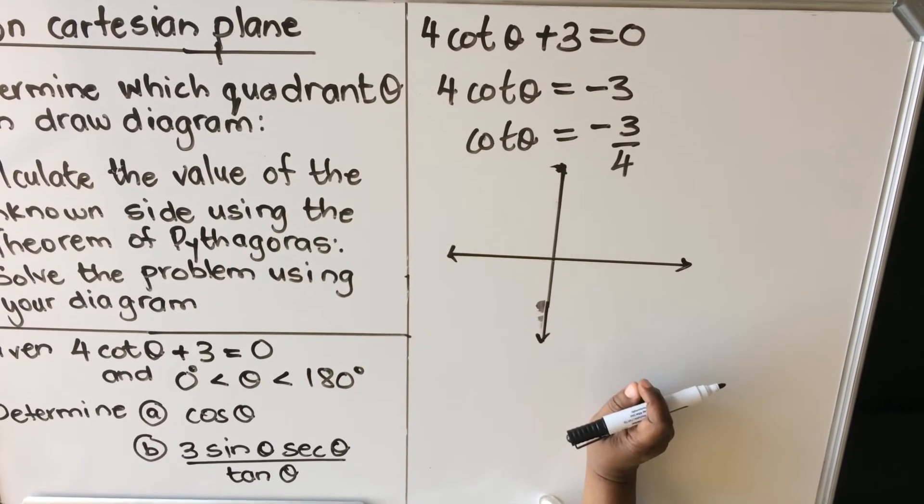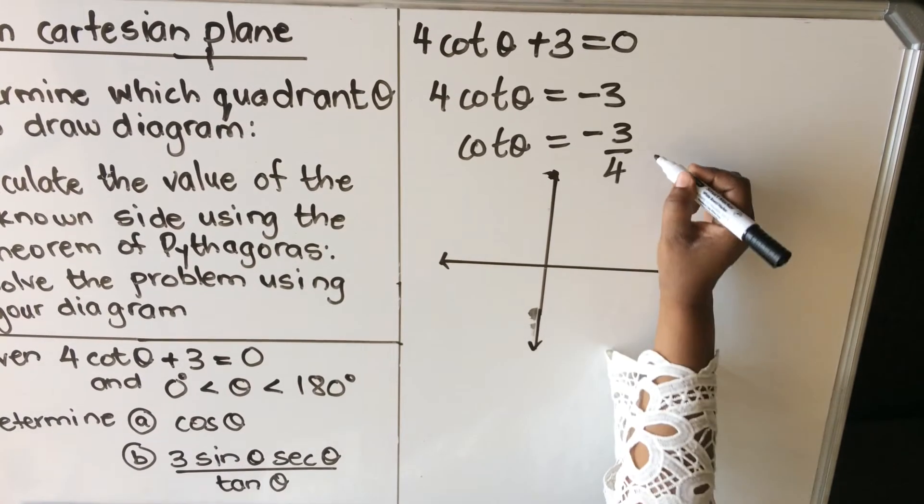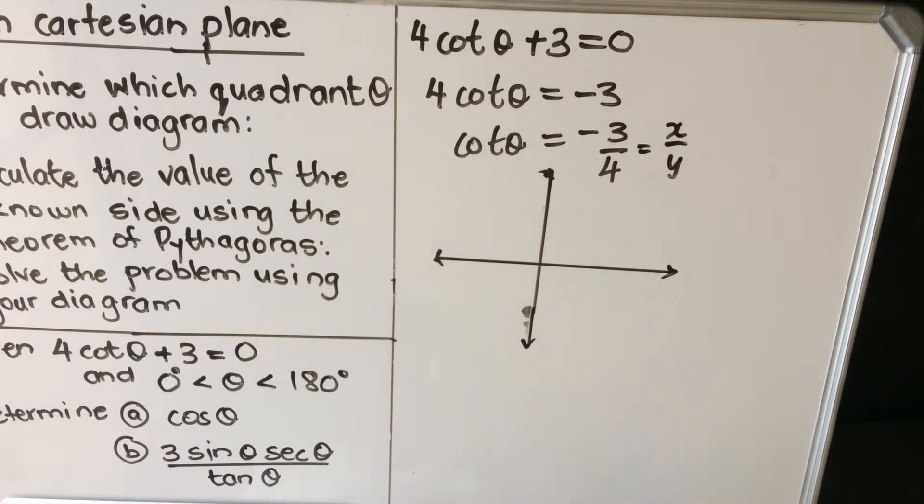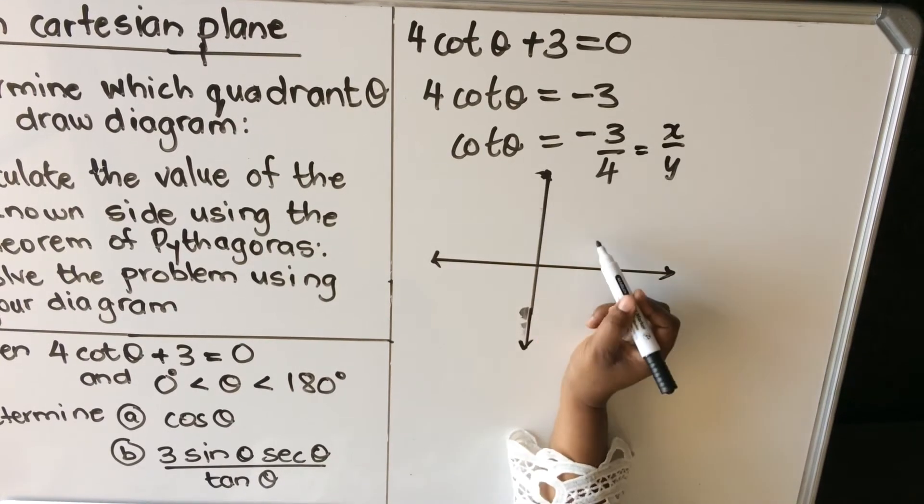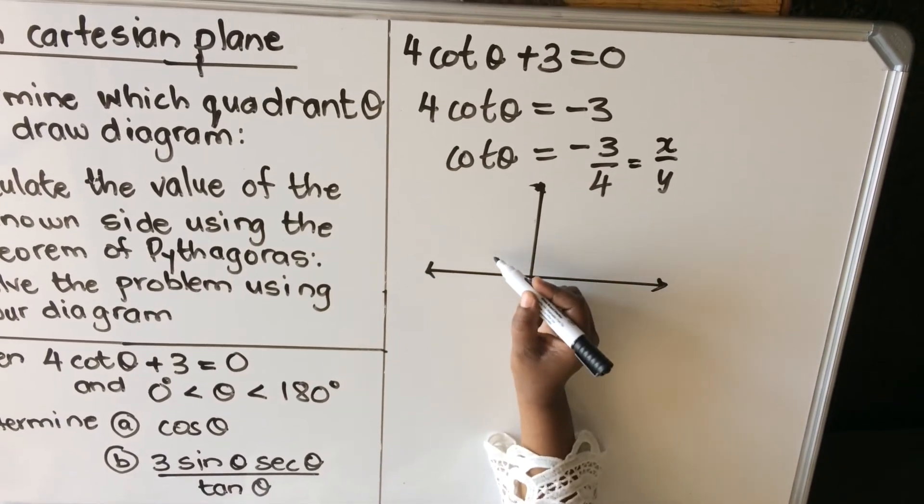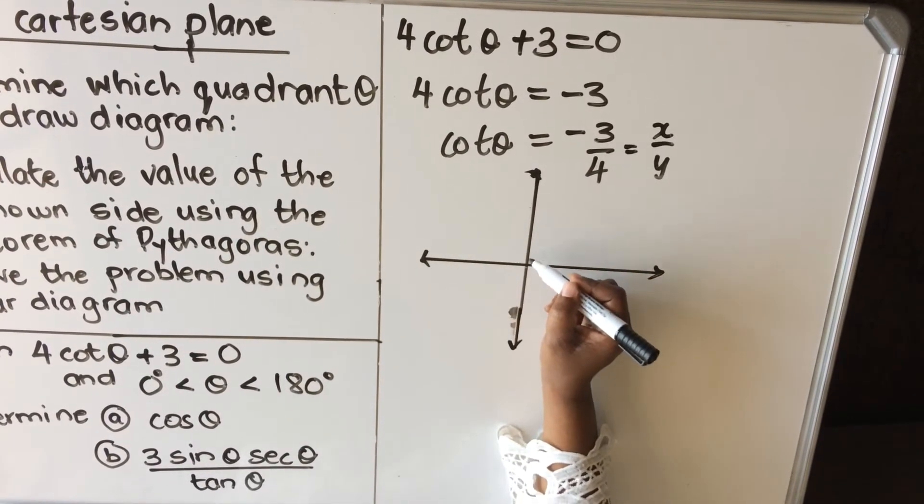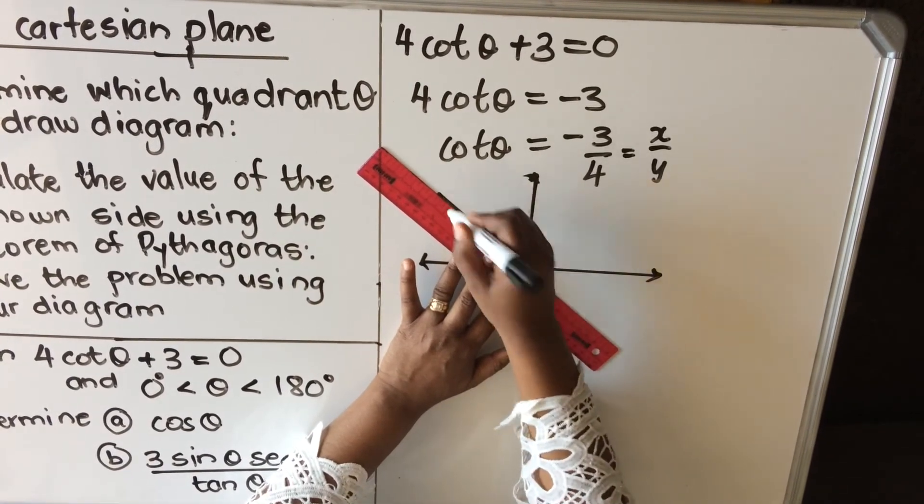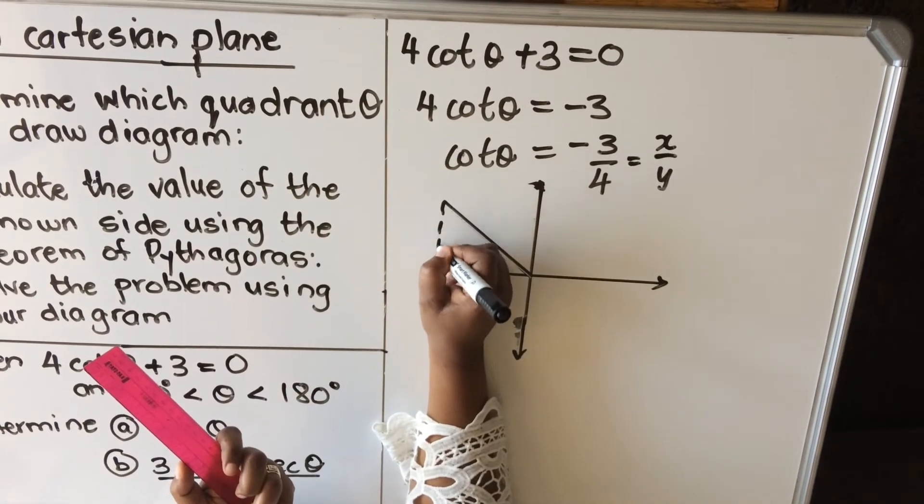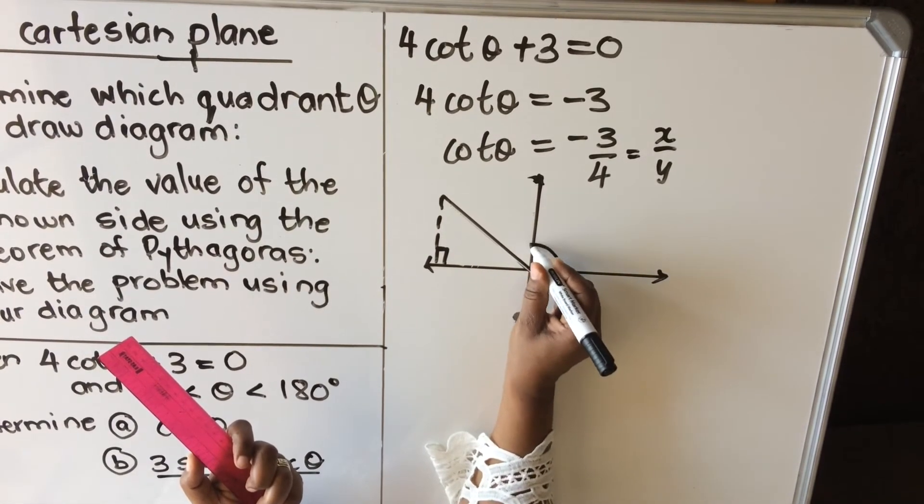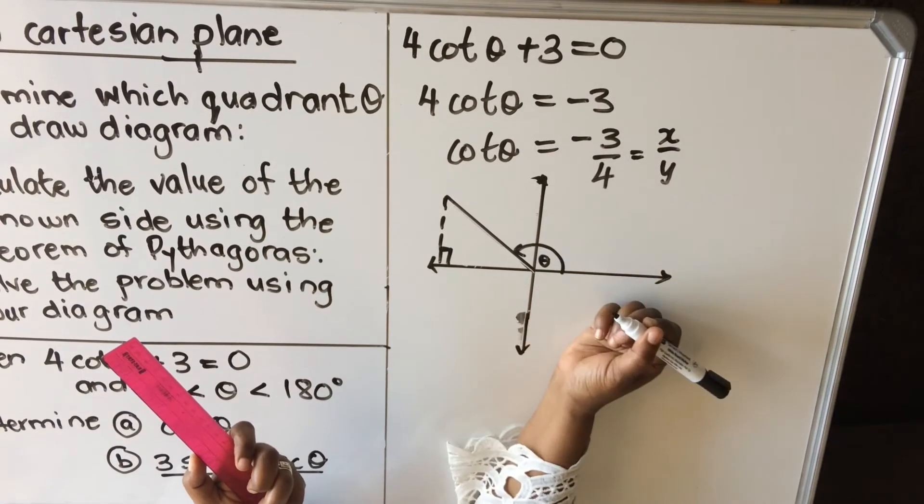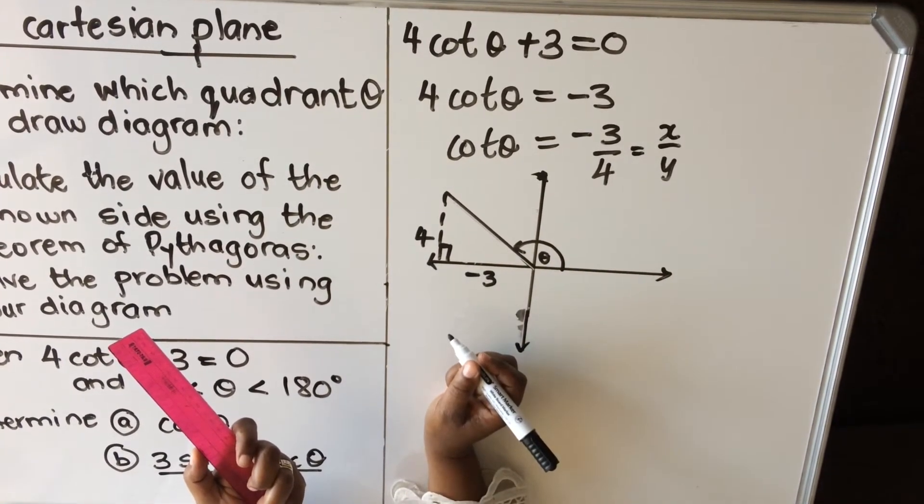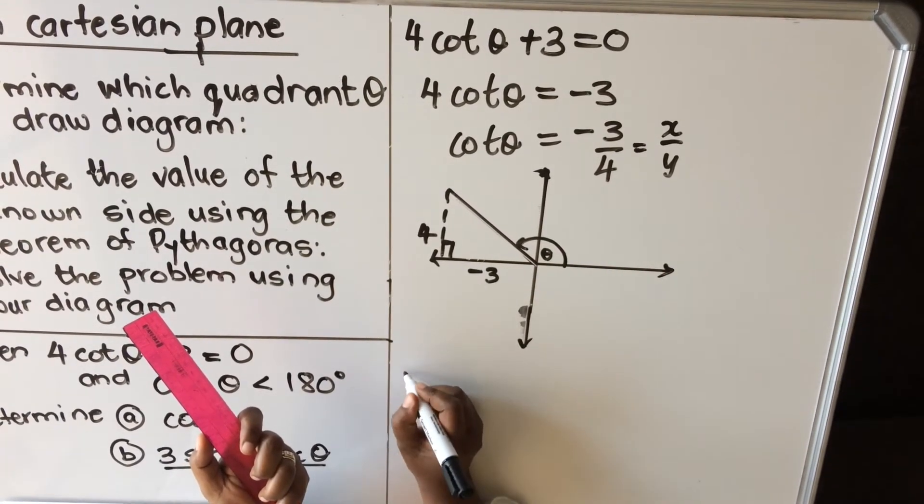When I look at my interval, they say theta is greater than 0 and less than 180, so it can be in this quadrant or that quadrant. Now I need to find what's the ratio. Cot is the inverse of tan. Tan is y over x, so it means cot is x over y. In the first quadrant, x and y are both positive, so it's not in the first quadrant. In the second quadrant, x is negative and y is positive, so it means my x is the negative one, so I'm in the second quadrant.